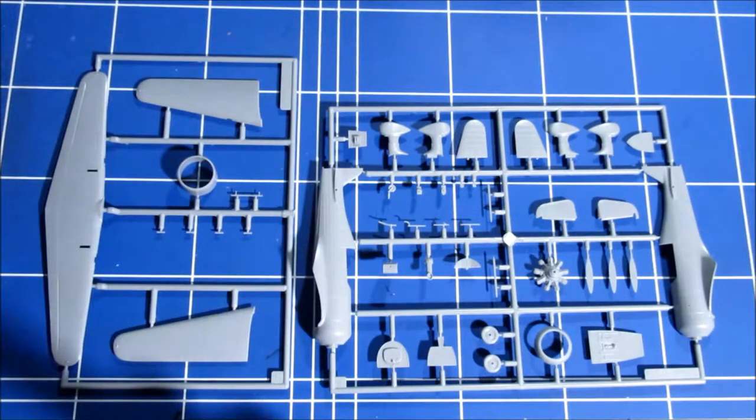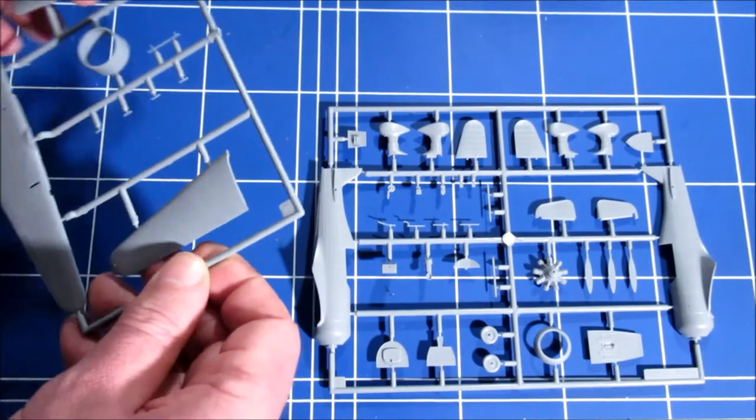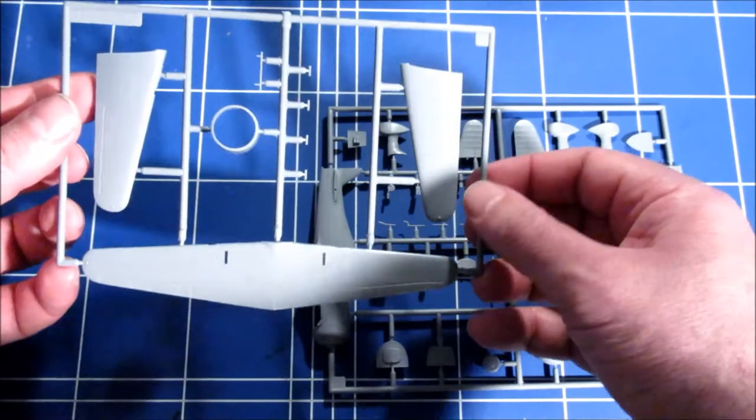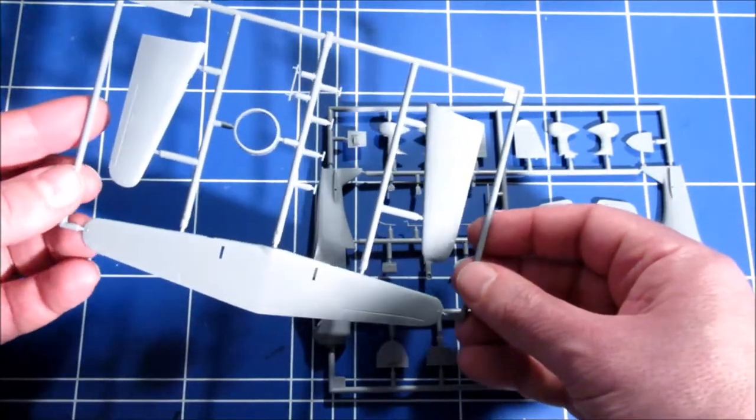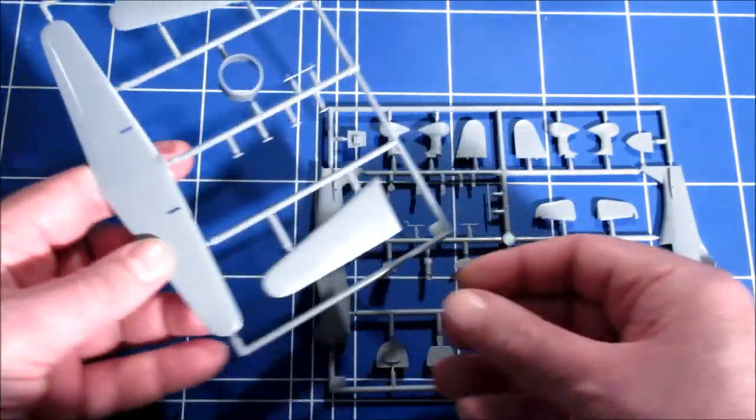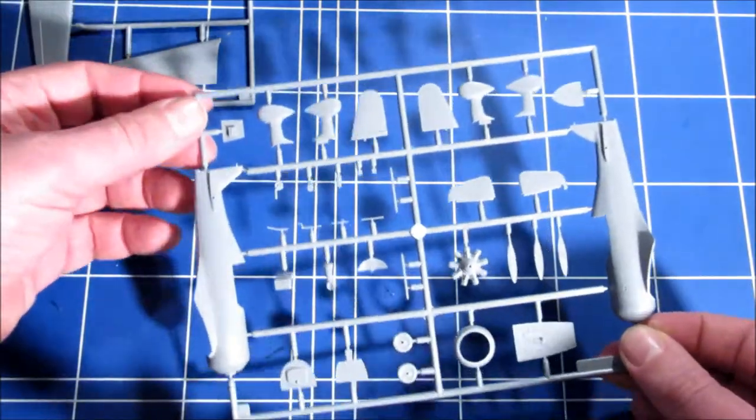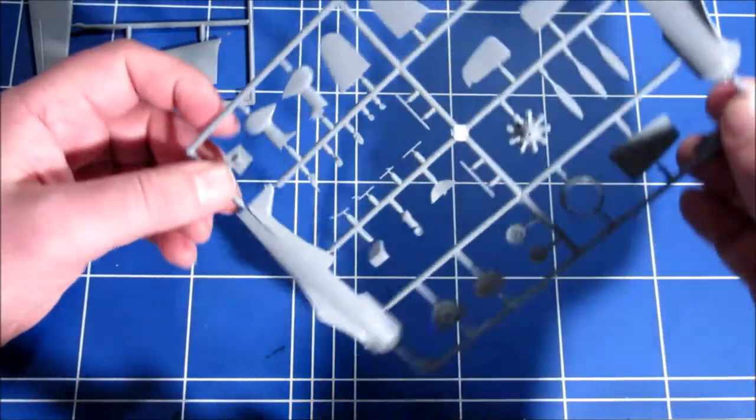Nice transparencies. And the rest, yeah, well the detail is much, much better. Some engraved panel lining, very subtle because it's got wooden wings. The ailerons look much better as well. And here the wheels, much nicer.